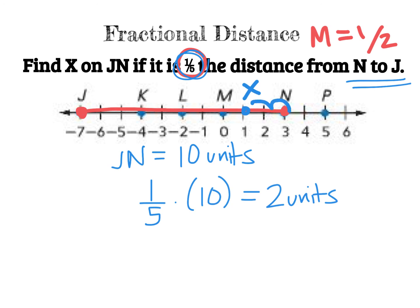So the thing here to understand is several. One, we're not looking at the full distance. We're not looking at the halfway distance. We're looking at a fifth of the distance. So I first count the full distance, which is 10 units. And then I multiply it by one fifth so I can figure out what that fractional distance is. Once I find the fractional distance, I care about the direction in which I'm going. I want to go from N to J. So I start at N, and I count two units over towards J. And that's where X is located.